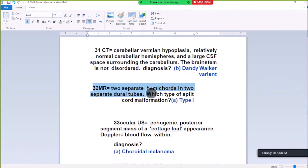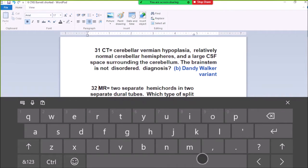Question 32. MRI shows two separate hemicords in two separate dural tubes. Which type of split cord malformation? Type 1. Two separate hemicords in two separate dural tubes, this is split cord malformation Type 1.